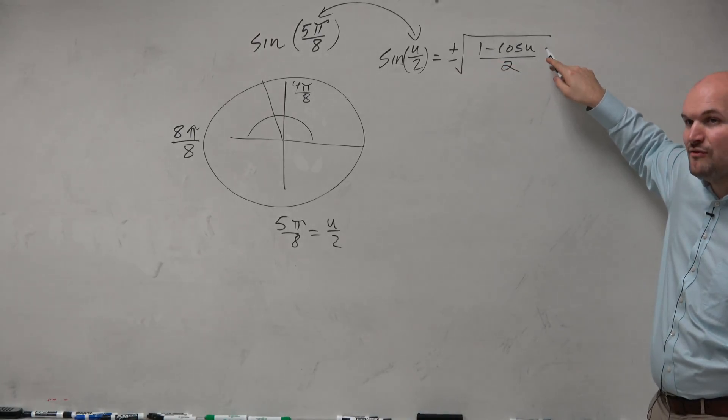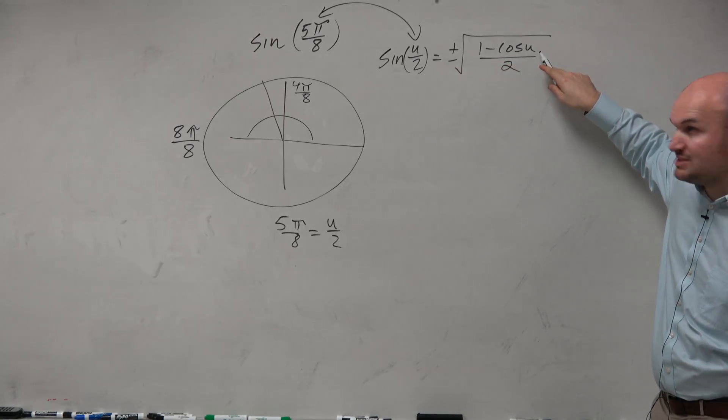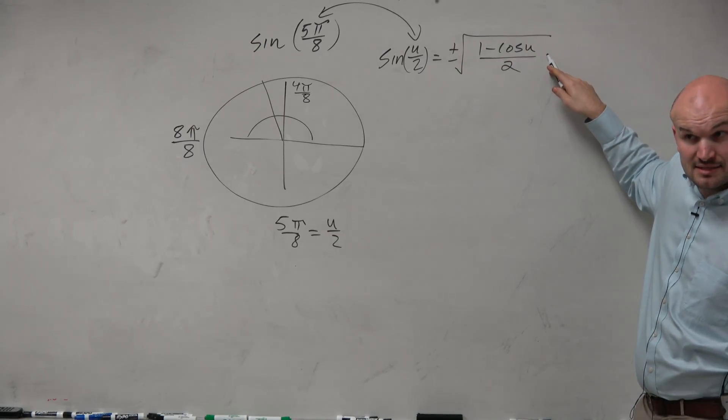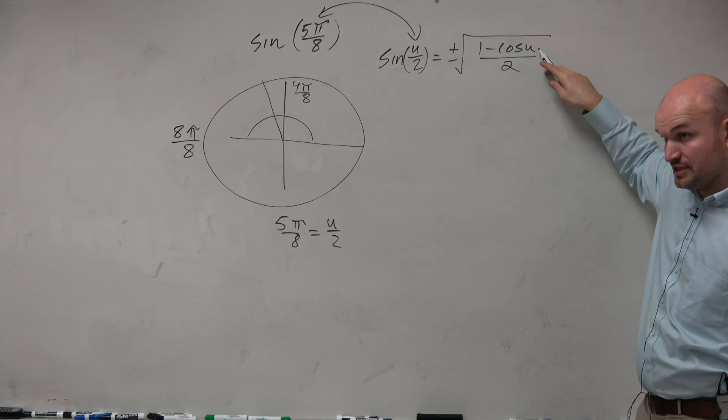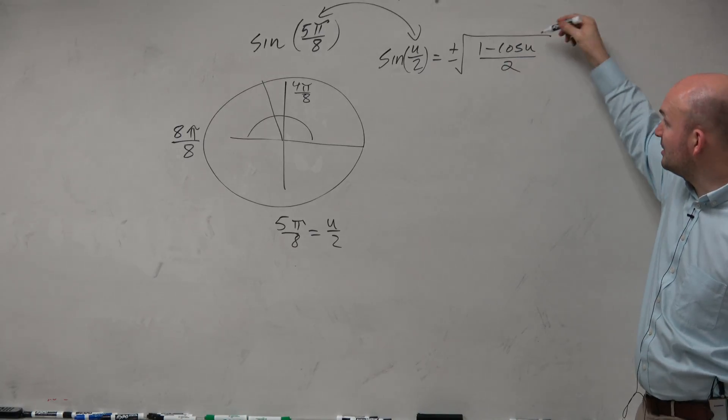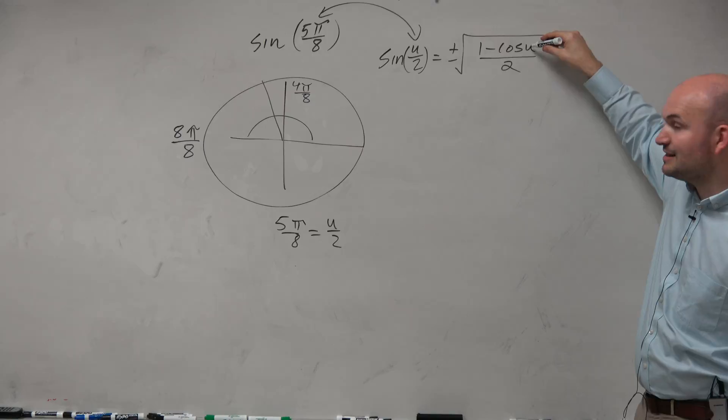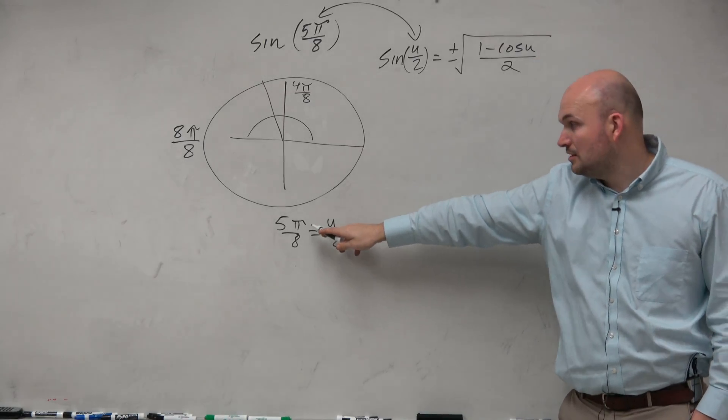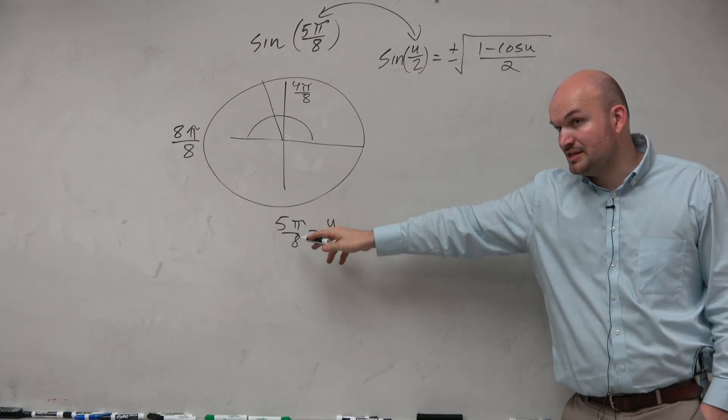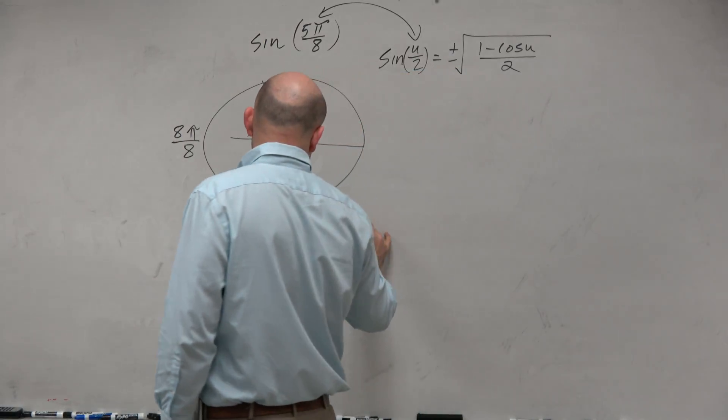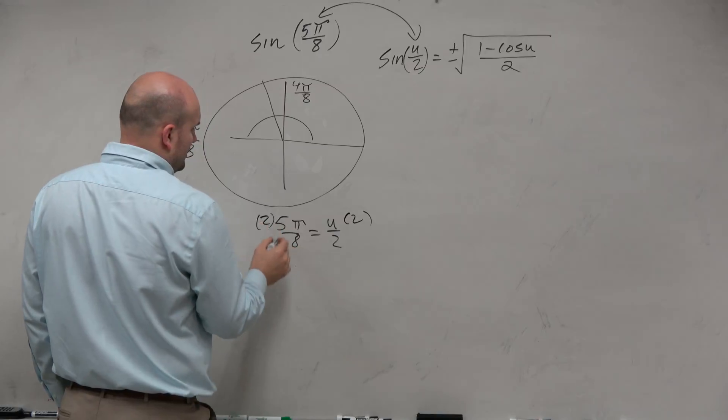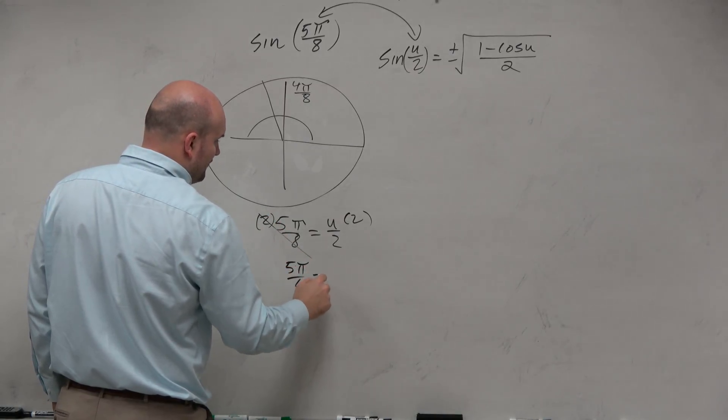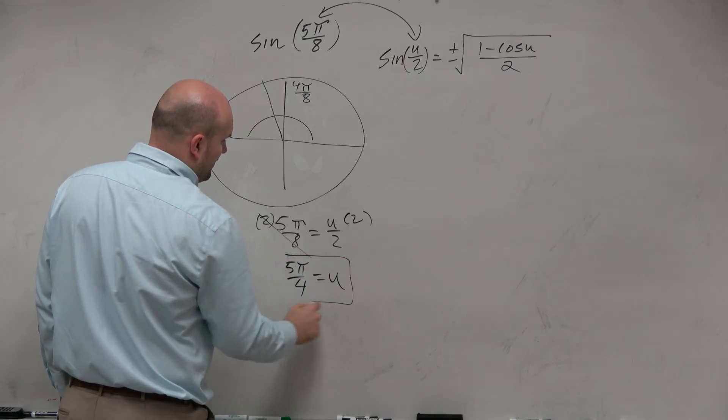But look at the formula. Inside the formula, it's not using u over 2. It's not using the same angle. It's using u. The whole equation is over 2, but inside the function is just u. So what that means is we need to figure out what u is in terms of this problem. So I'll multiply by 2 on both sides. That can reduce to 4. So that's 5π over 4 equals u. That's important.